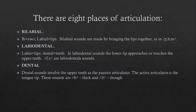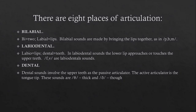There are eight places of articulation. The first one is bilabial. 'Bi' means two, 'labial' means lips. So when a sound is produced using both the lips — when both the lips touch each other — the sound produced this way is called a bilabial sound. For example, p, b, and m. In the p sound, both lips touch each other, and likewise for b and m.